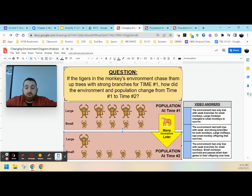Option two, the environment had both trees with weak and strong branches for both monkeys. Large monkeys had small monkey offspring that survived. So that's why we have more small monkeys and some large monkeys.